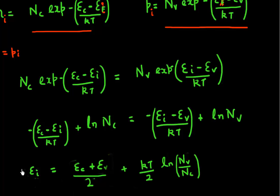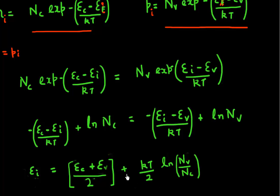So we see that the Fermi level in the intrinsic semiconductor is close to the middle of the band gap — that's given by the (Ec + Ev)/2 term. But there's an additional term involving the ratio of effective density of states that could shift it away from the mid-band gap.